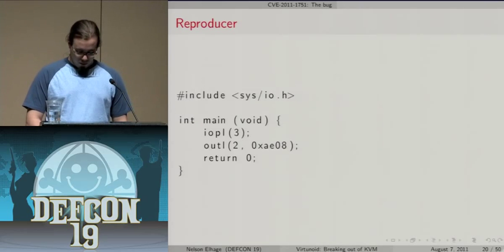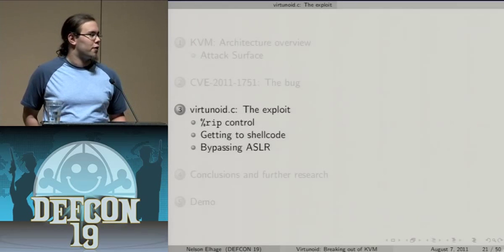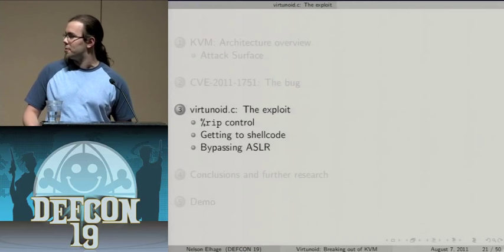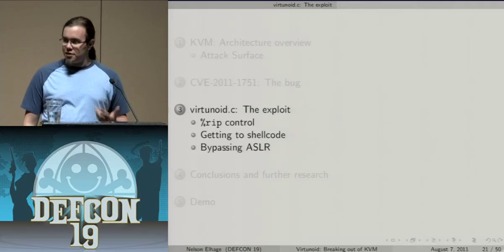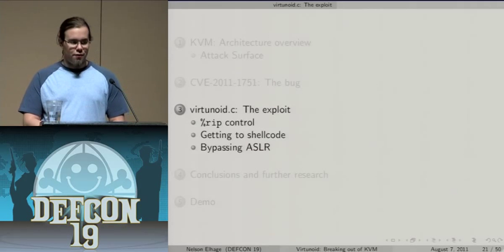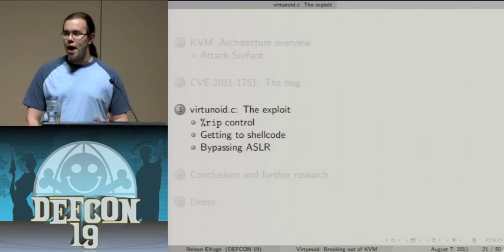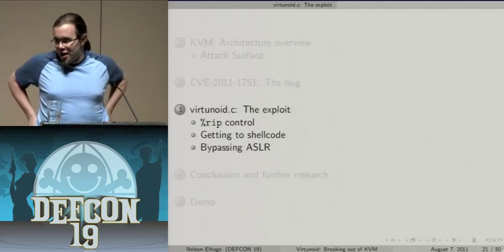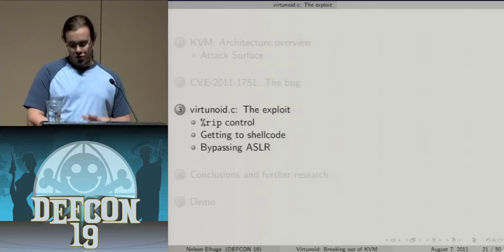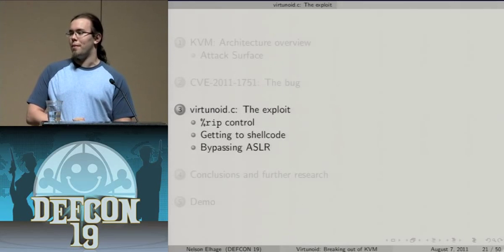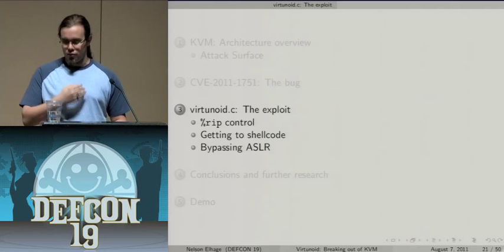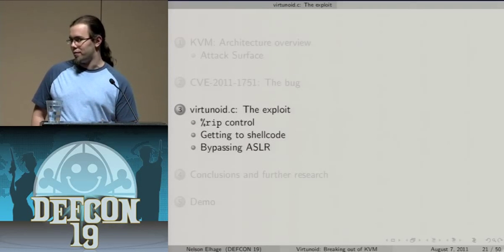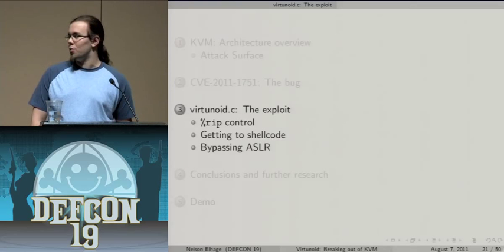We have a beautiful use-after-free. To turn this into a working exploit, we'll work in three stages: first, how do we go from this use-after-free to controlling the instruction pointer? Second, how do we leverage that into executing arbitrary shellcode inside the guest? Third, we'll deal with address space randomization — right now assuming no ASLR and that we can predict addresses in the QEMU-KVM process — then handle bypassing ASLR for real-world deployments.